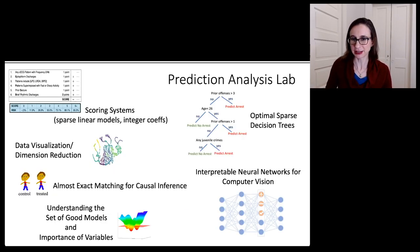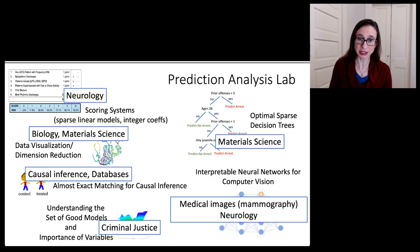Anyway, so one nice thing about working in interpretable machine learning is that you get to apply it in real domains and actually help people or make scientific discoveries. And so I actually have collaborators in a lot of different subjects where we're actually applying these methods to try to make a difference in the world. So I have collaborators who are material scientists, neurologists, biologists, radiation physicists or medical physicists and radiologists, as well as I have collaborators who work in causal inference and databases and also other computer scientists. It's fun to work with computer scientists, too.